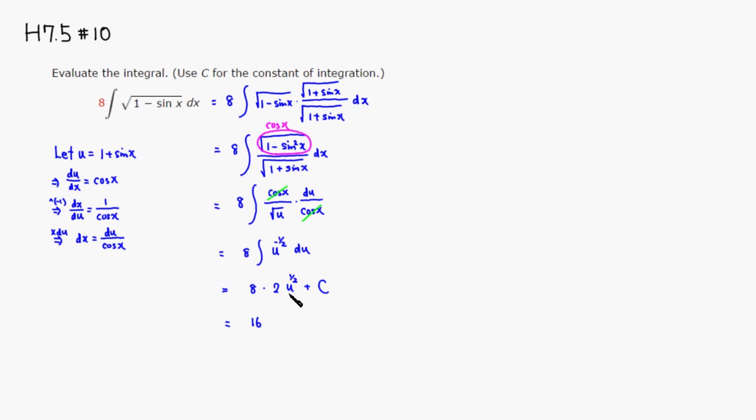And u is originally 1 plus sine, so 1 half power is square root. And it's 1 plus sine of x, then plus some constant c.